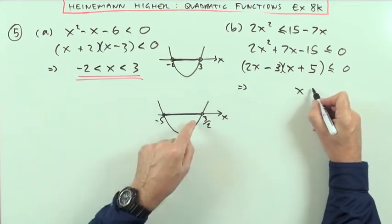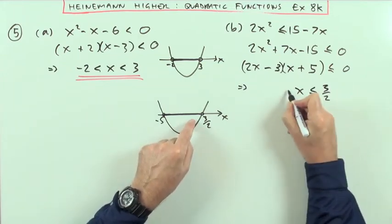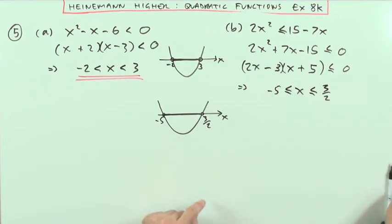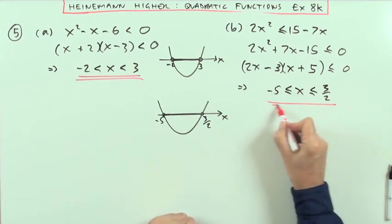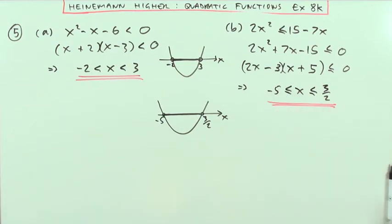is x has to be less than or equal to 3 upon 2, or greater than or equal to negative 5. That's question 5.